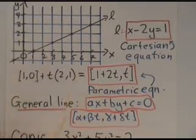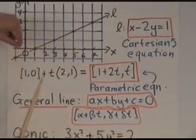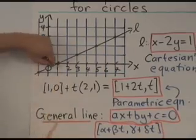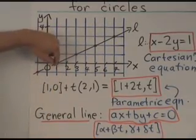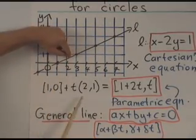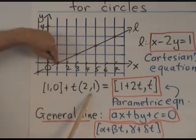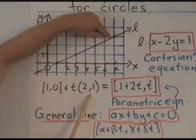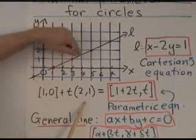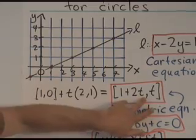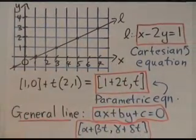Geometrically what the parametrization means is this. We start at the point (1,0). The direction vector for the line, that vector right there, is the vector (2,1). Now if we start at the point (1,0) and we go any multiple of the direction vector, then we stay on the line. The multiple could be positive or negative. So that expression reduces to that, and that's how we get the parametrization for that line.